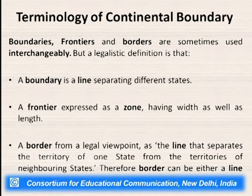Before going further, we should know the different terminologies used in continental boundaries. A boundary is a line that separates different states. A frontier is a zone having length and width where population may live in that particular zone. A border is that line which can be a zone or which can be a line.